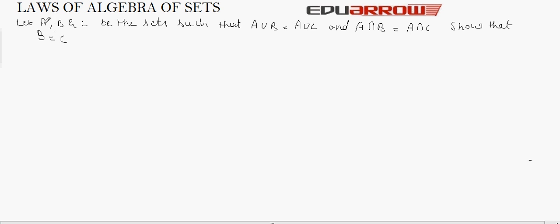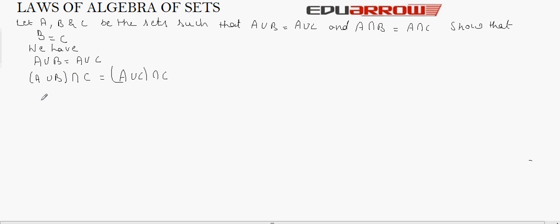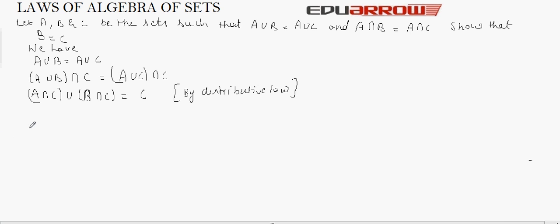Let us see this through an example. It is given that there are three sets A, B and C such that A union B is equal to A union C, and A intersection B is equal to A intersection C. We have to show that B is equal to C. Starting with A union B equals A union C, if we intersect both sides with C, by the distributive law we get A intersection C union B intersection C equals C.